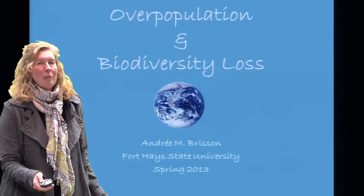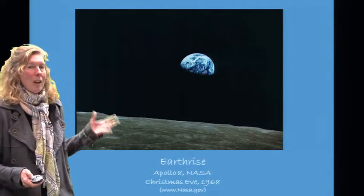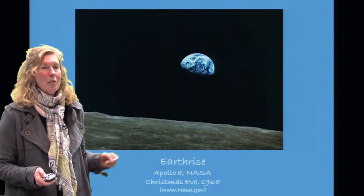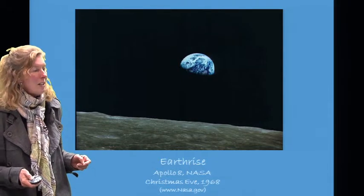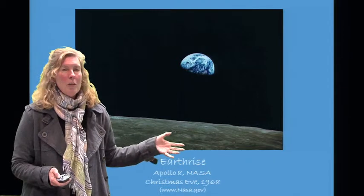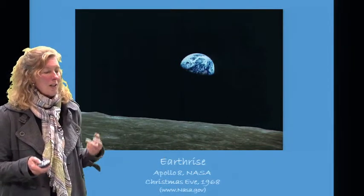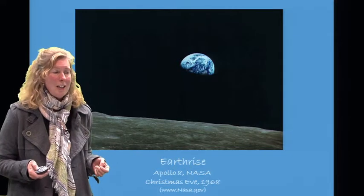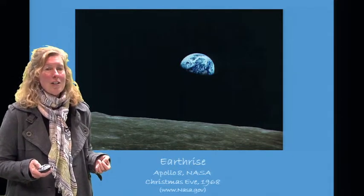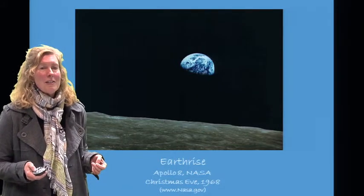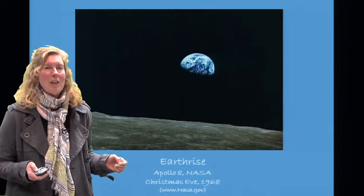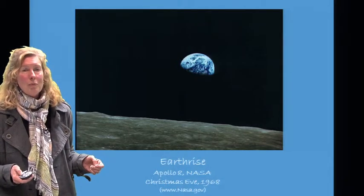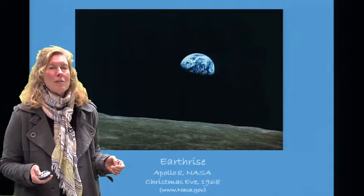Today I'll be speaking about overpopulation and biodiversity loss. This is Earthrise, probably the most famous photograph taken. It is the Earth taken by the Apollo 8 mission in 1968. The astronauts were orbiting the moon, and as they came across Earthrise on the dark side of the moon, they were overcome with emotion. It was Christmas Eve. They saw their planet, started taking photographs, and wished the Earth a Merry Christmas. This is really the first baby picture of the Earth, and this photograph is credited with starting the environmental movement. For the first time, it gave us a sense of global identity.